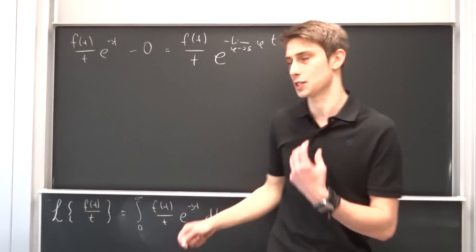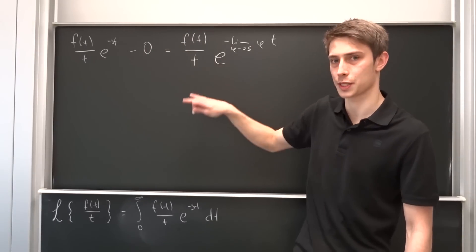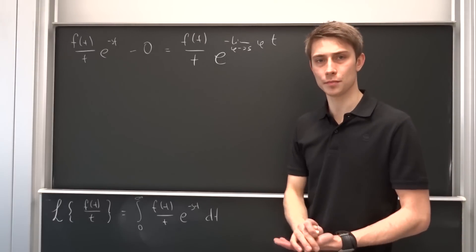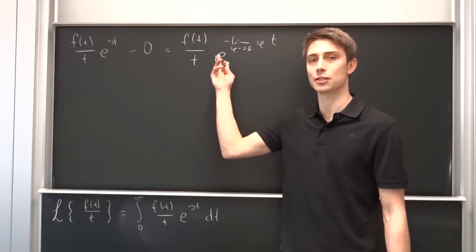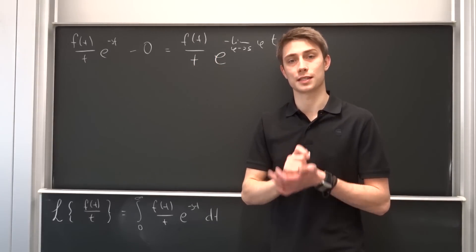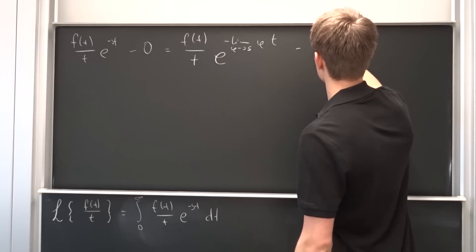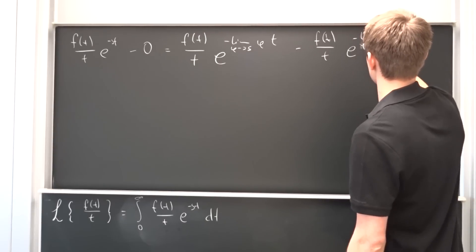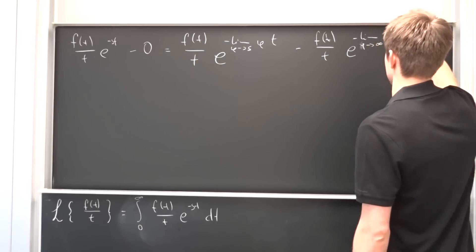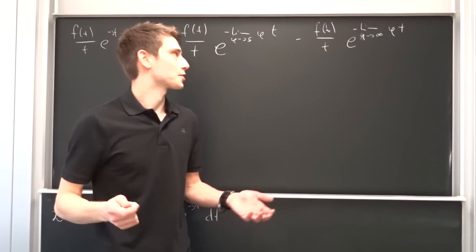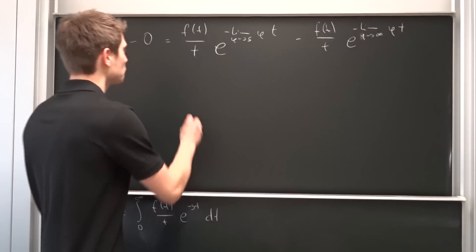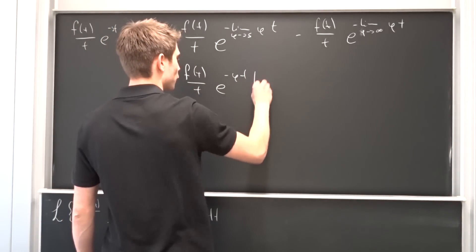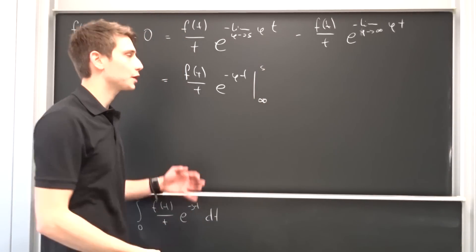Now we have to express this 0 in terms of φ. How would we get a 0? If φ approaches positive infinity, that means e to the minus infinity, which is 1 over infinity, and that would be 0. So this is just minus f(t) over t times e to the minus (limit as φ approaches infinity of φ times t). We can write this with upper and lower bounds: f(t) over t times e to the minus φt, evaluated from infinity to s.